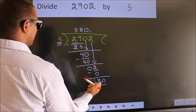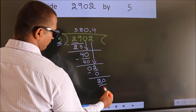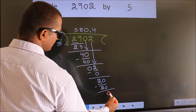When do we get 20 in the 5 times table? 5 times 4 equals 20. Now we subtract and get 0.